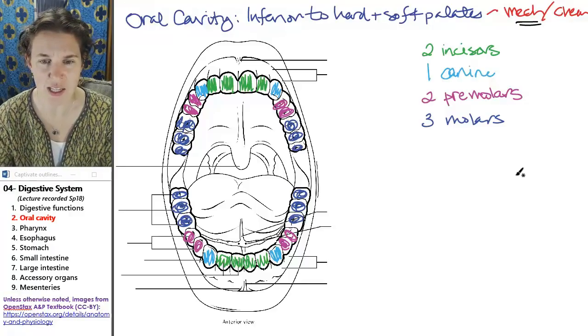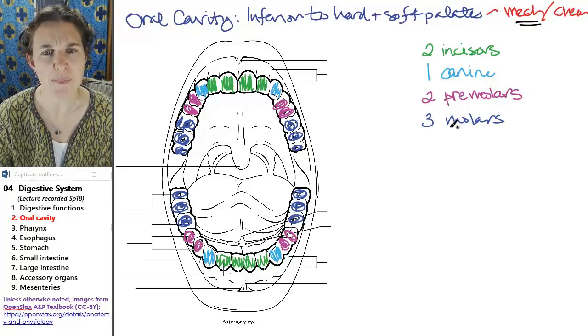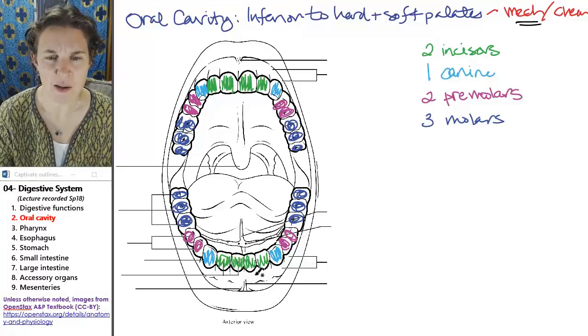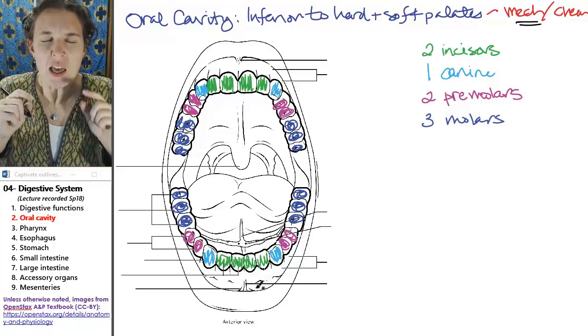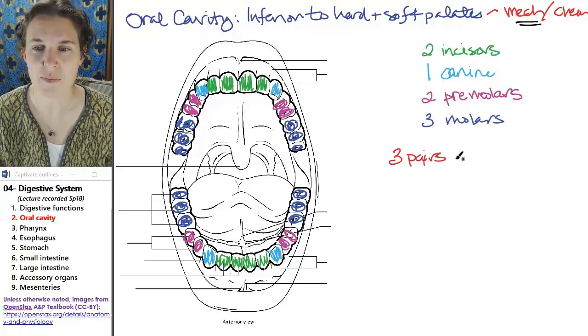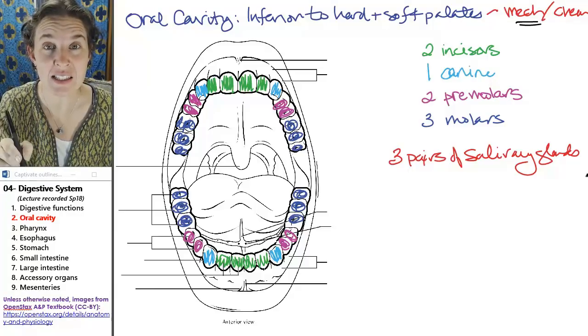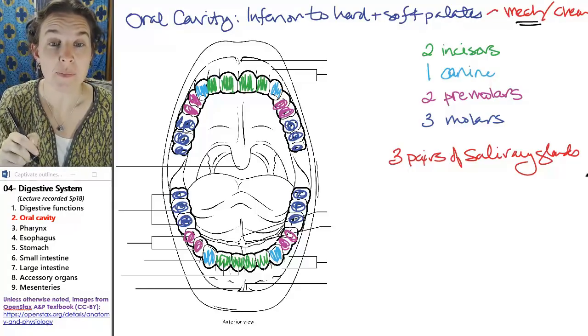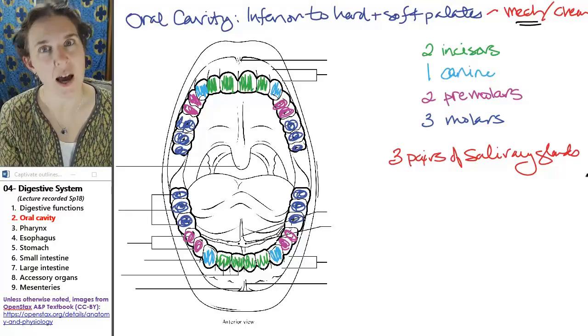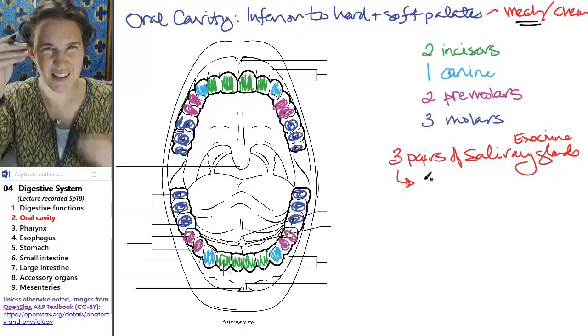Let's look at our salivary glands. Now, there's a couple more structures that I'm going to label here in this diagram. But salivary glands, and I think I've got an image over here of salivary glands, but you actually have three sets of salivary glands, three pairs. Salivary glands. Now, think about this a second. What kind of glands are salivary glands? They're secreting substances into your mouth, which is outside of the body, so they are exocrine glands.